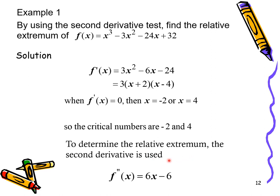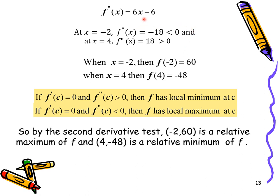Example 1: Design a one-liter oil can shaped like a right circular cylinder. What dimensions will use the least material? The volume is V = πR²H = 1000 (since 1 liter = 1000 ml). Solving for H gives H = 1000 / (πR²). The surface area is A = 2πR² + 2000/R. Differentiating A with respect to R gives dA/dR = 4πR − 2000/R².